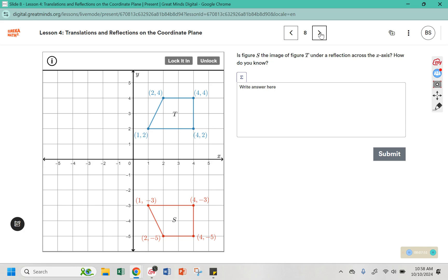Here in number 8, it says, is figure S the image of figure T under a reflection across the X axis? How do you know? If it's reflected across the X axis, it should be the same distance from that line in both of these pictures. So T is 2 away from the line, but S is 1, 2, 3 away from the line. So this is not a reflection over the X axis. It should be the same distance away from the line, but on the opposite side, so one would be at positive 2 and the other would be at negative 2.